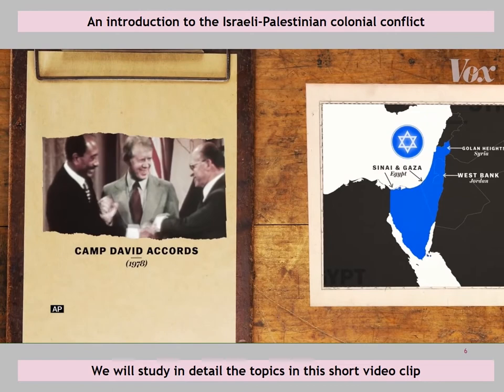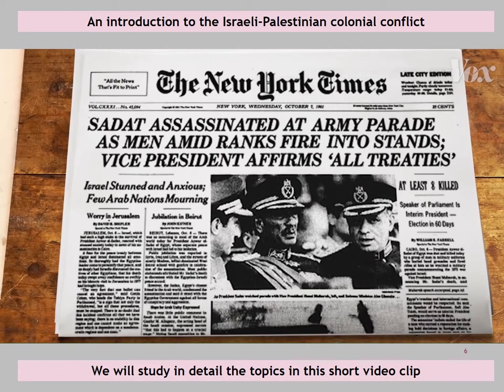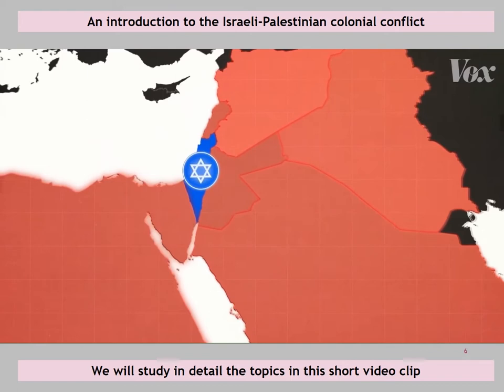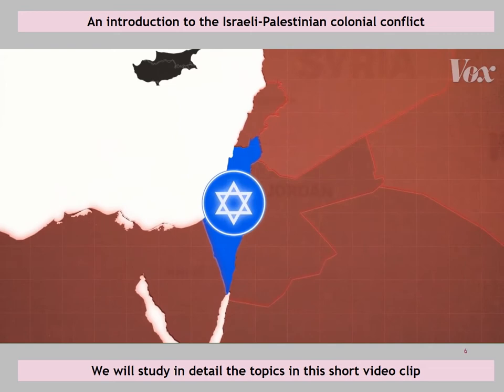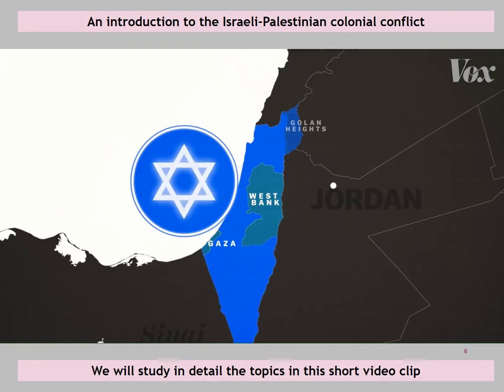In 1978, Israel and Egypt signed the US-brokered Camp David Accords, and shortly after, Israel gave Sinai back to Egypt as part of a peace treaty. At the time, this was hugely controversial in the Arab world — Egyptian President Anwar Sadat was assassinated in part because of outrage against it. But it marked the beginning of the end of the wider Arab-Israeli conflict. Over the next few decades, the other Arab states gradually made peace with Israel, even if they never signed formal peace treaties. But Israel's military was still occupying the Palestinian territories of the West Bank and Gaza, and this was when the conflict became an Israeli-Palestinian struggle.